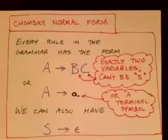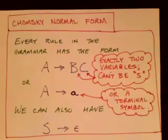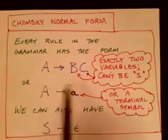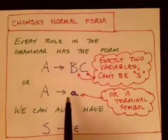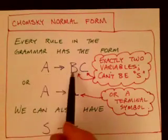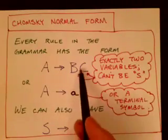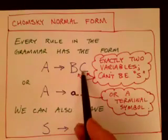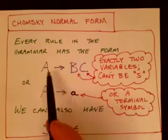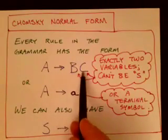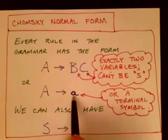In this video, I'm going to describe Chomsky normal form and give an example of converting a grammar into Chomsky normal form. A context-free grammar is in Chomsky normal form if every rule has a certain form — it's a constraint we put on context-free grammars. Every rule is constrained so that on the right-hand side, we can either have two non-terminals or a single terminal.